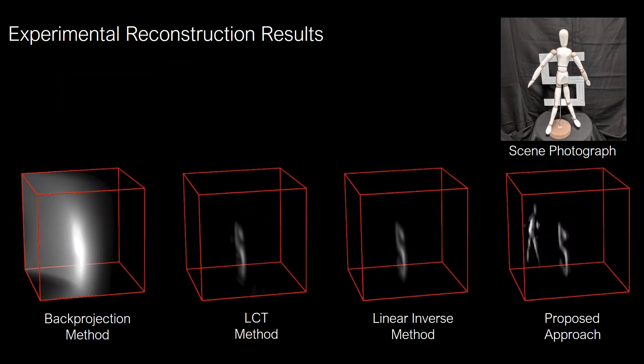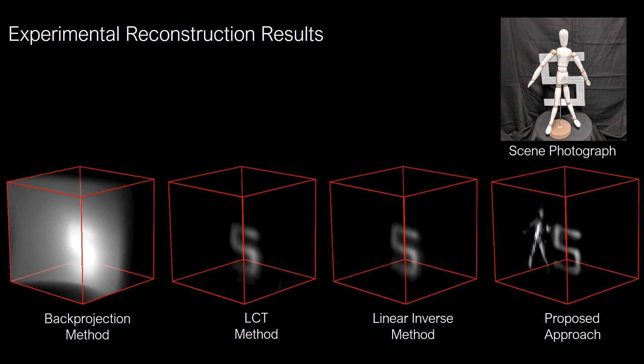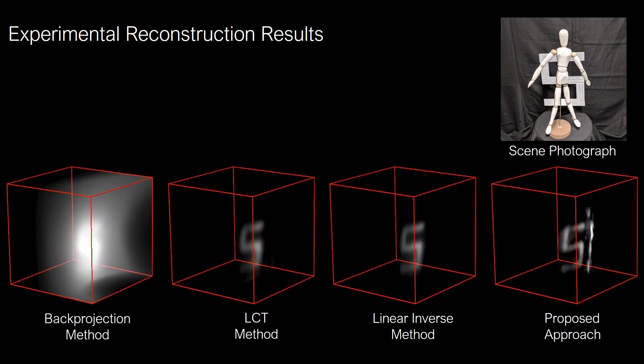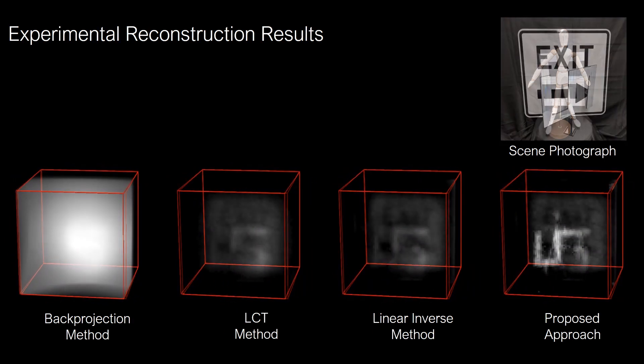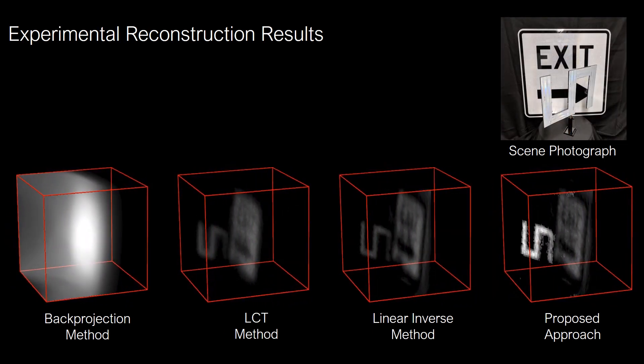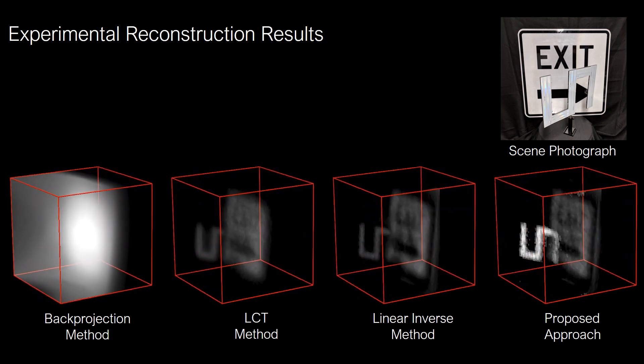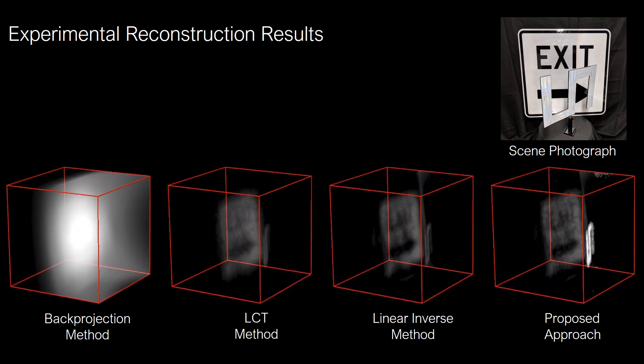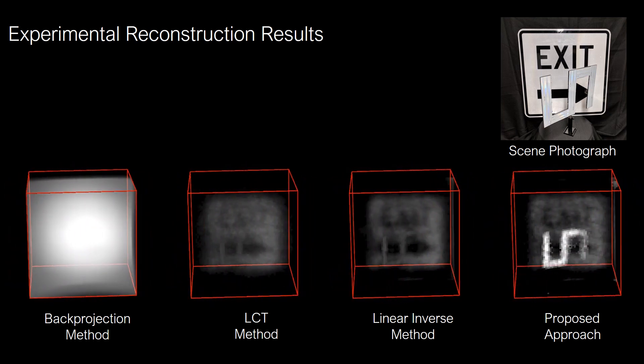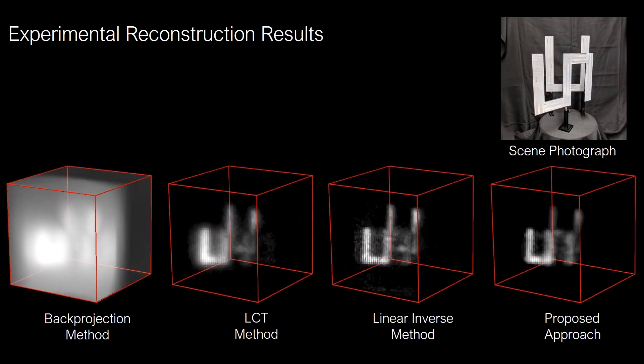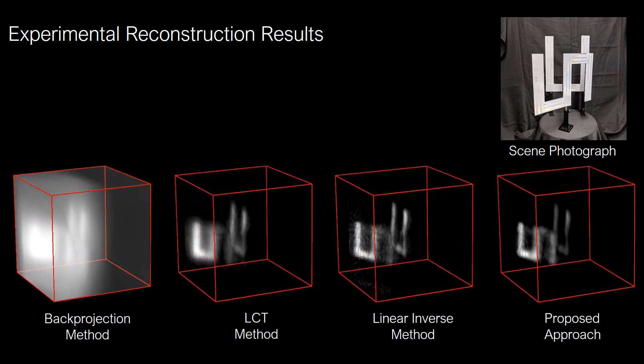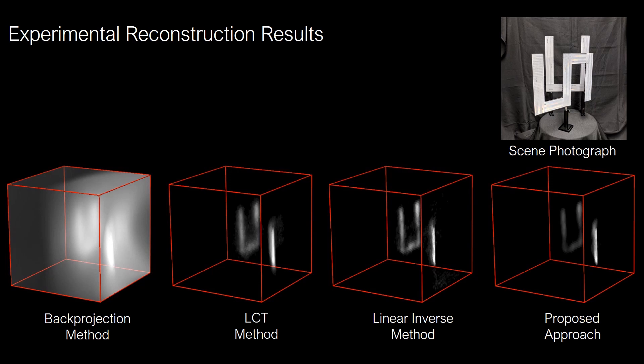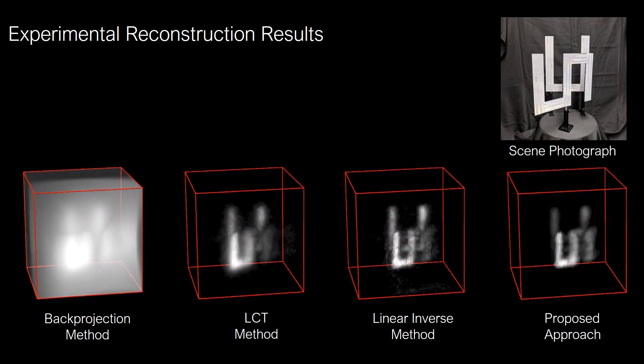Next we show experimental results acquired with the physical measurement setup. Our method can recover object geometry that is occluded or heavily mixed with temporal responses from other objects nearby. Fine object details whose temporal responses are damped by occluders, or mixed with nearby strong reflectors, are recovered accurately by the proposed approach.